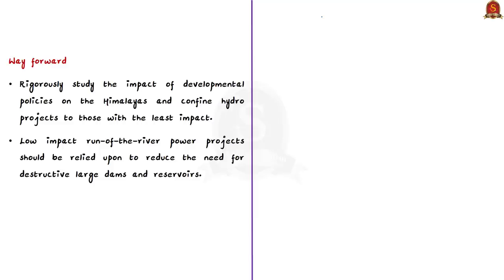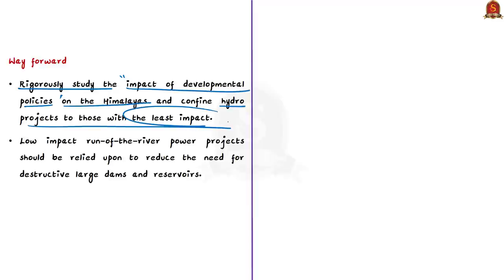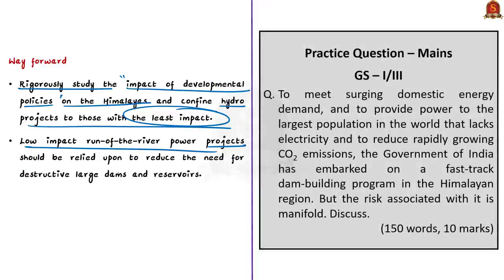The author concludes by stating the need to rigorously study the impact of developmental policies on the Himalayas and to confine hydro projects to areas that have the least impact. Low-impact run-of-the-river power projects should be relied upon, as these will reduce the need for destructive large dams and reservoirs while protecting the fragile environment, associated biodiversity, and living human, animal, and plant populations.